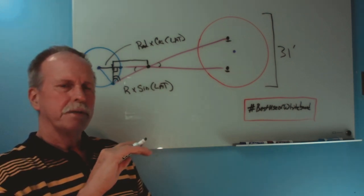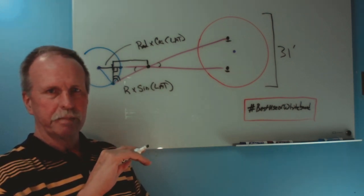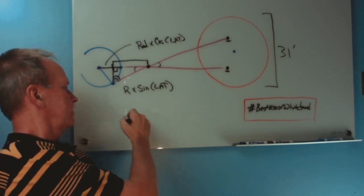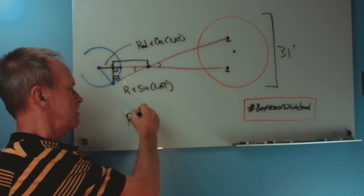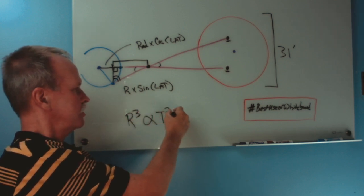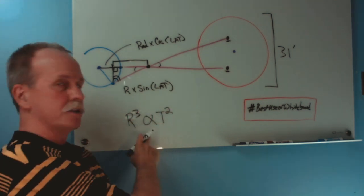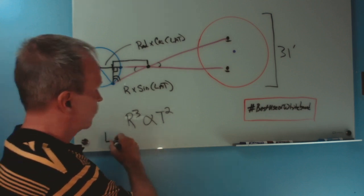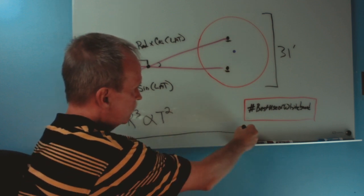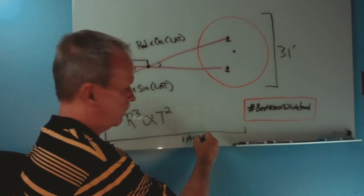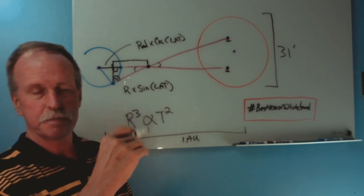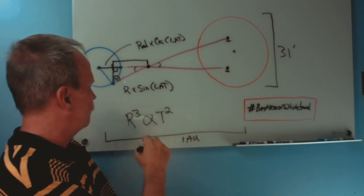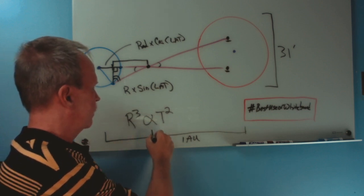Now next we have to go to something called Kepler's Laws of Planetary Motion. The third law of planetary motion is that radius cubed is proportioned to time squared. Now what does Kepler's law allow us to know? Well, we know that this distance from the center of the Earth to the center of the Sun is one astronomical unit. That's just by definition what one astronomical unit is.